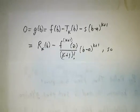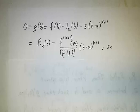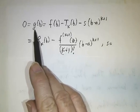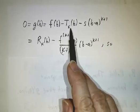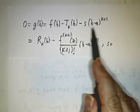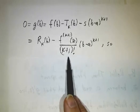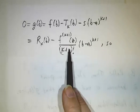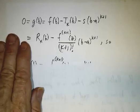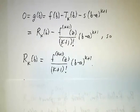Okay. In other words, 0 was g of b. That's f of b minus Tk of b minus our remaining term. And we plug in the value of s. We get this. And that tells us that the remainder at b was given by this expression.